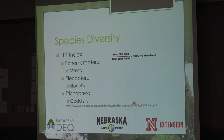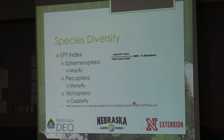One index more specific to water and streams is the EPT index, which deals with three families of macroinvertebrates: the Ephemeroptera, the Plecoptera, and the Trichoptera. Those three families are usually indicative of a very healthy, clean water. Using those three and figuring out the percentage of their abundances is usually a very good measure of a quality water or quality stream. It's a fairly common way to do an assessment of a water body.